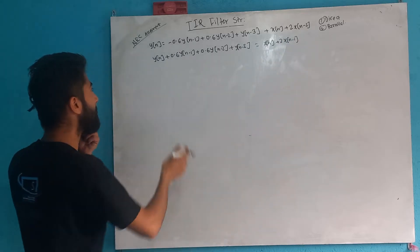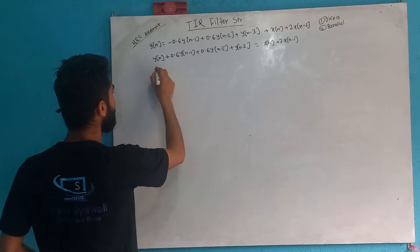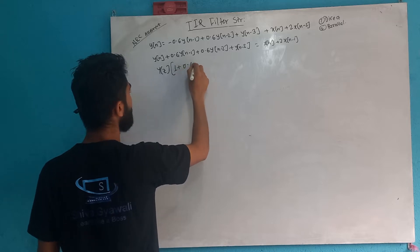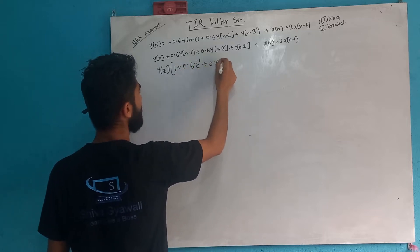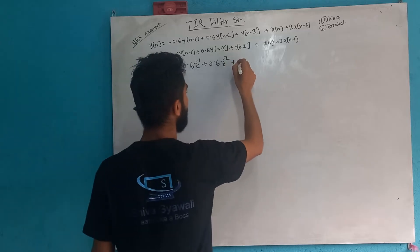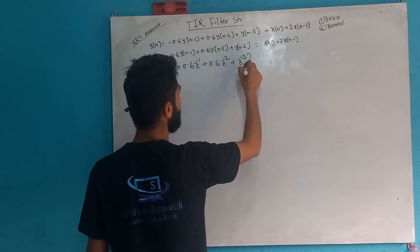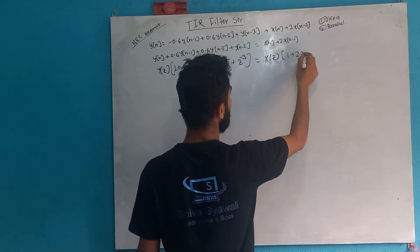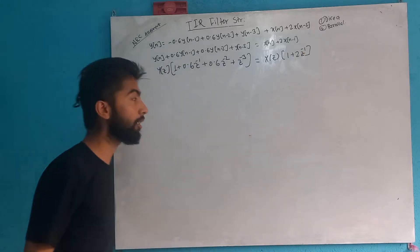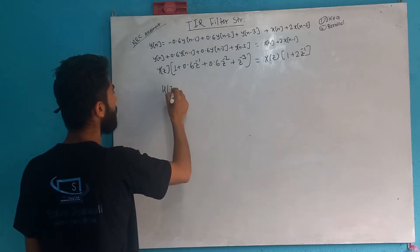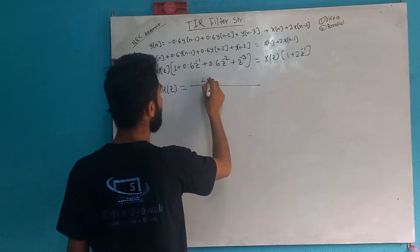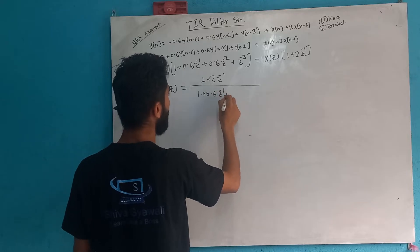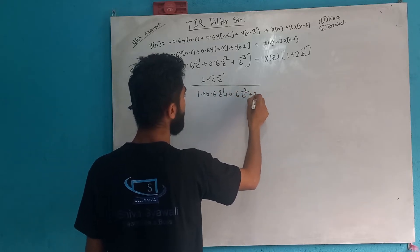So basically, Z is equal to 0.6·y(n-2) plus y(n-3) equals x plus 2·x(n-1). So, 1 plus 0.6·z⁻¹ plus 0.6·z⁻² plus z⁻³ equals x, equals x and 1. This gives us 1 plus 2z⁻¹. So Y(z) by X(z) is equal to 1 plus 2z⁻¹ divided by 1 plus 0.6z⁻¹ plus 0.6z⁻² plus z⁻³.